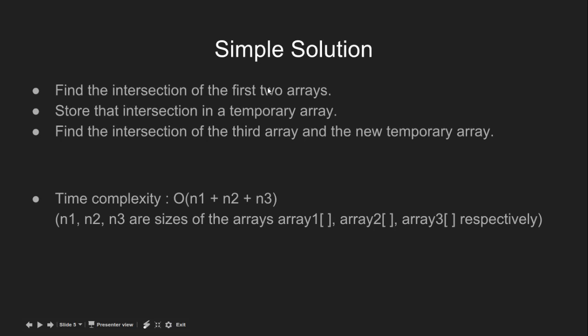Let us now discuss a simple solution. First, we find the intersection of first two arrays. We store that in a temporary array. Then, we find the intersection of third array with the temporary array. The new intersection will give the intersection of all the three arrays. The time complexity of this solution is O(n1 + n2 + n3) where n1, n2 and n3 are the sizes of array 1, 2 and 3 respectively.